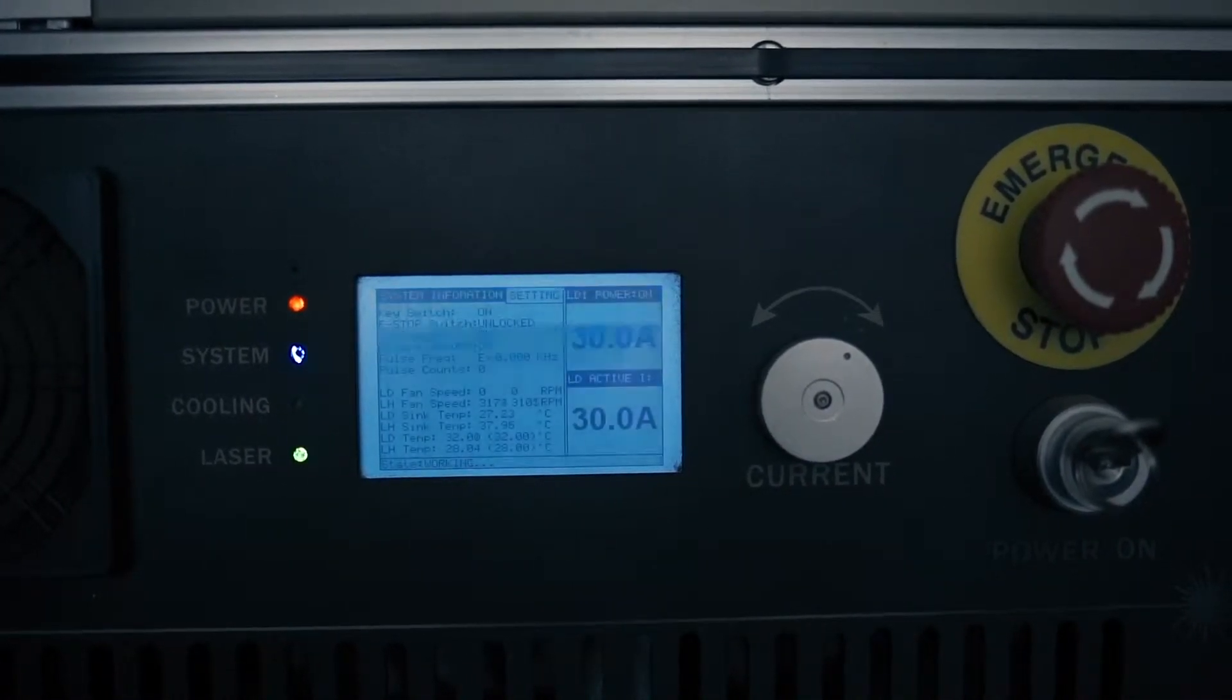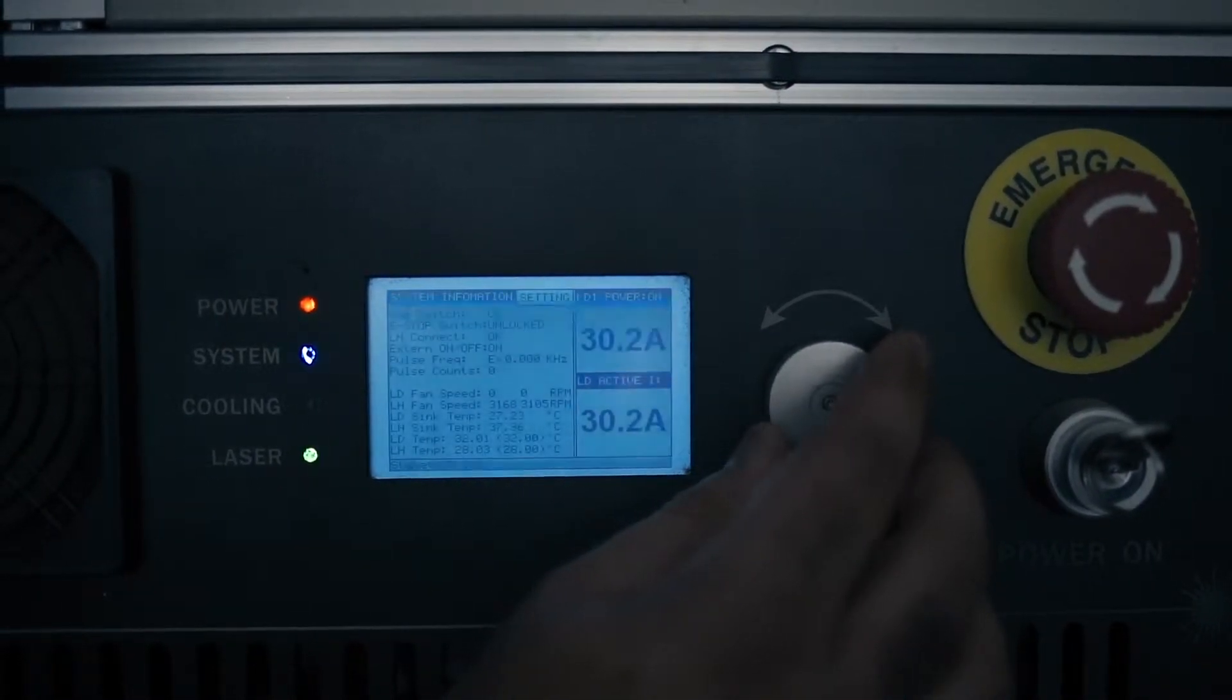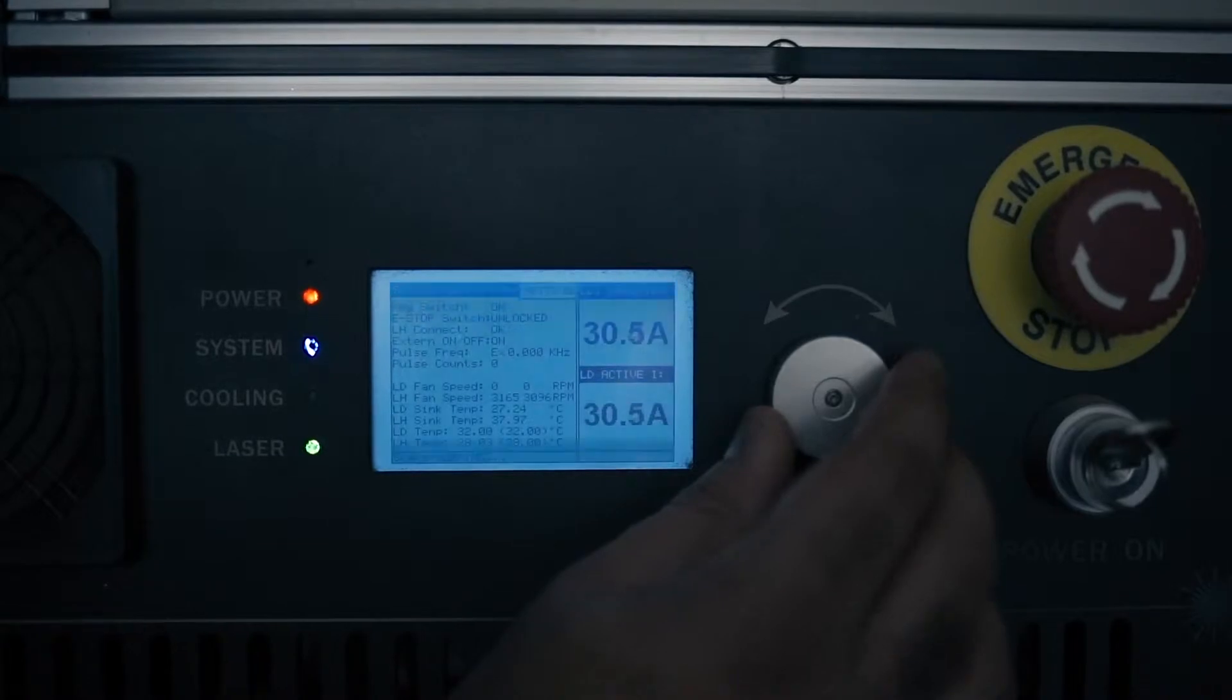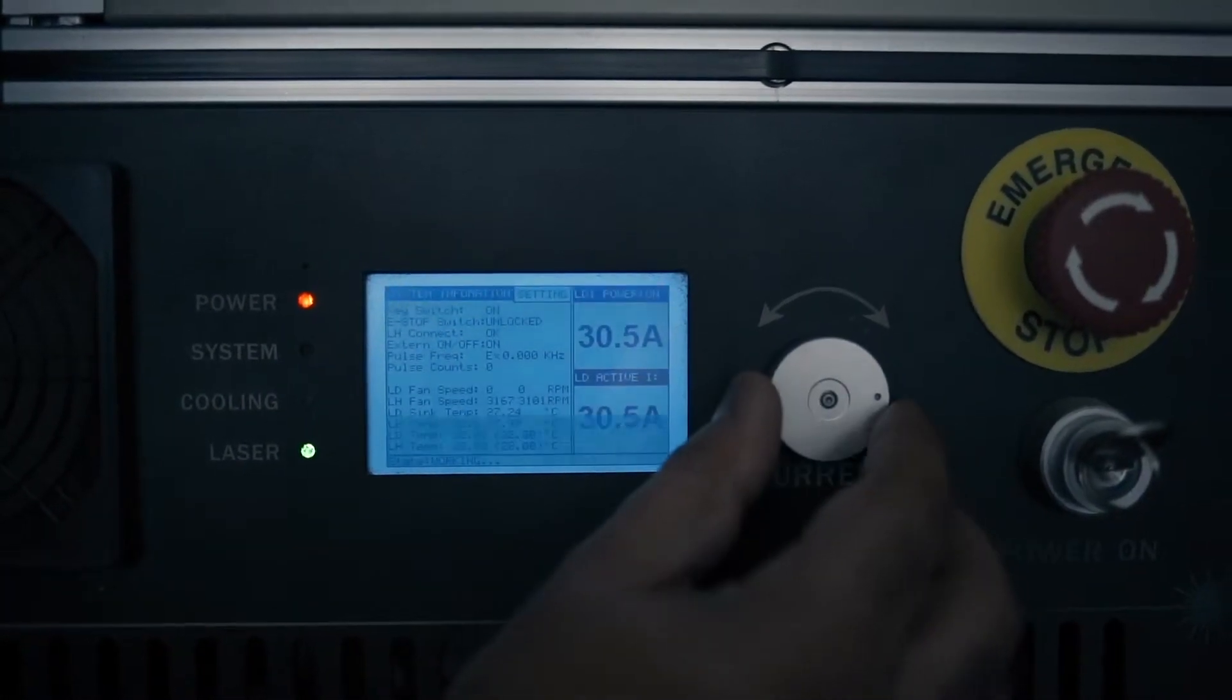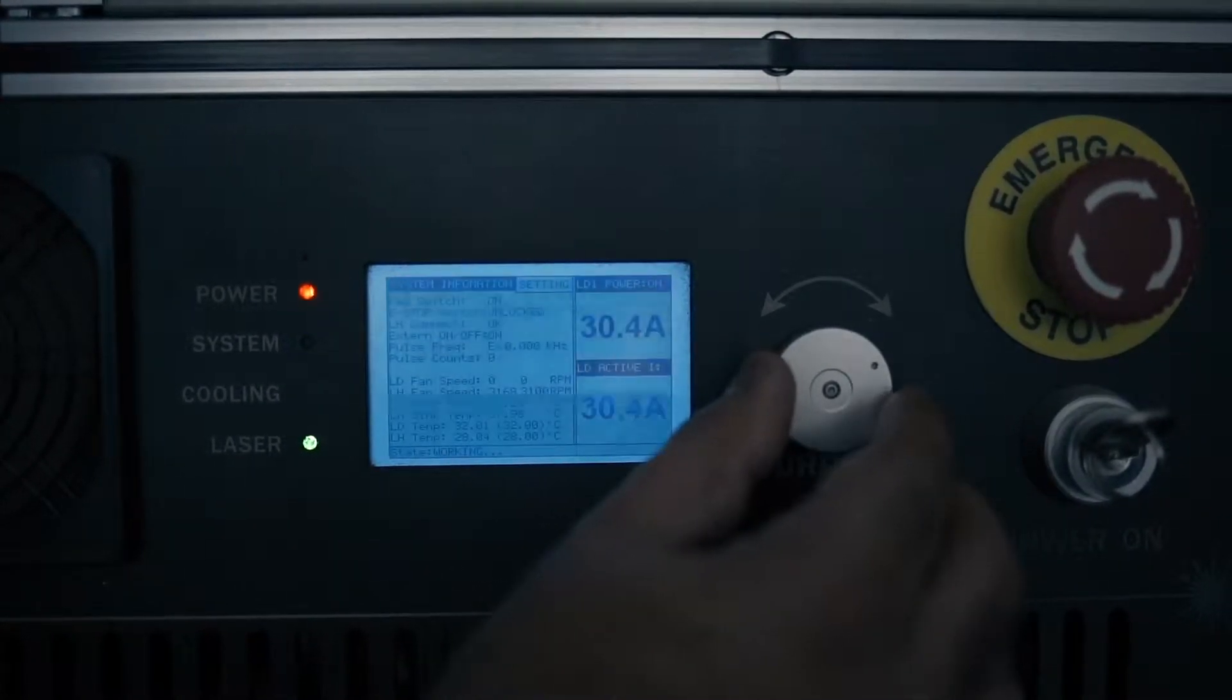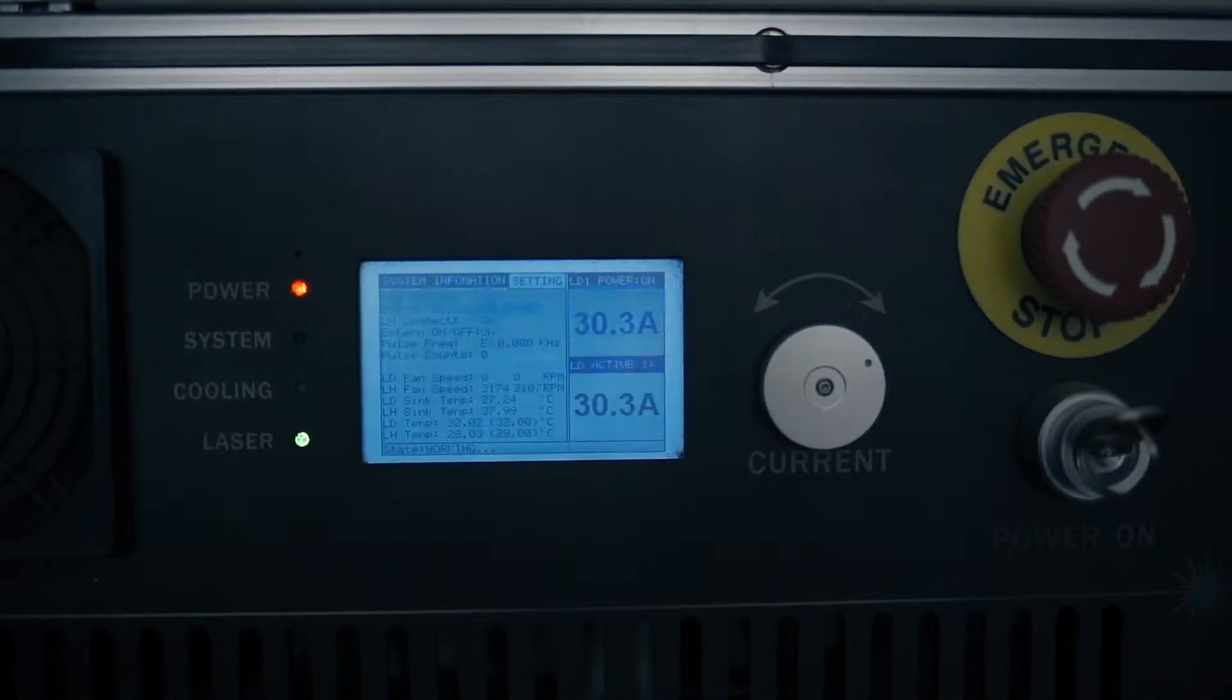Now, if you want to be a perfectionist, you can go to the one tenth of a setting. So in this case, you'd go from 30 to 30.5, assuming that at 31 it cracked, and see if at 30.5 it cracks. If it does, then decrease it by 0.1, and then again by 0.1 until you see that that image has not cracked and then you're at the best setting.